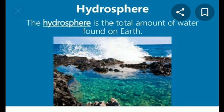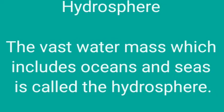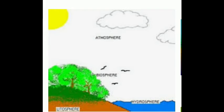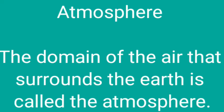What is hydrosphere? Hydro means water. The vast water mass which includes oceans and seas is called the hydrosphere. What is atmosphere? The domain of air that surrounds the earth is called the atmosphere.